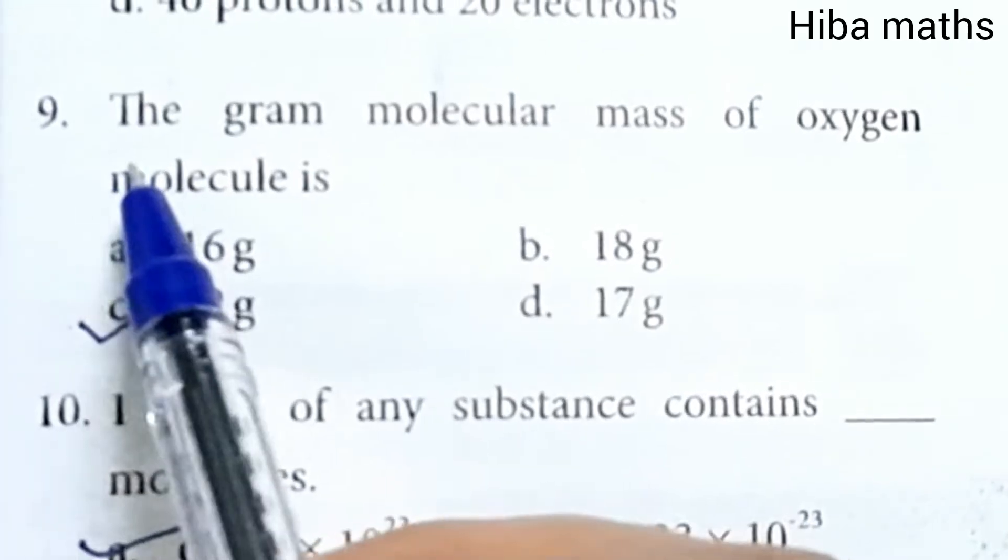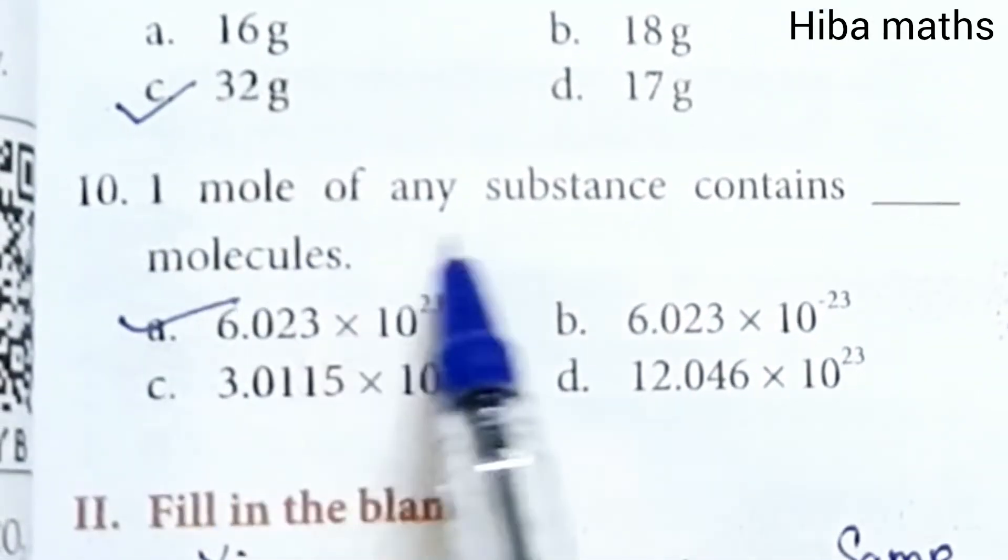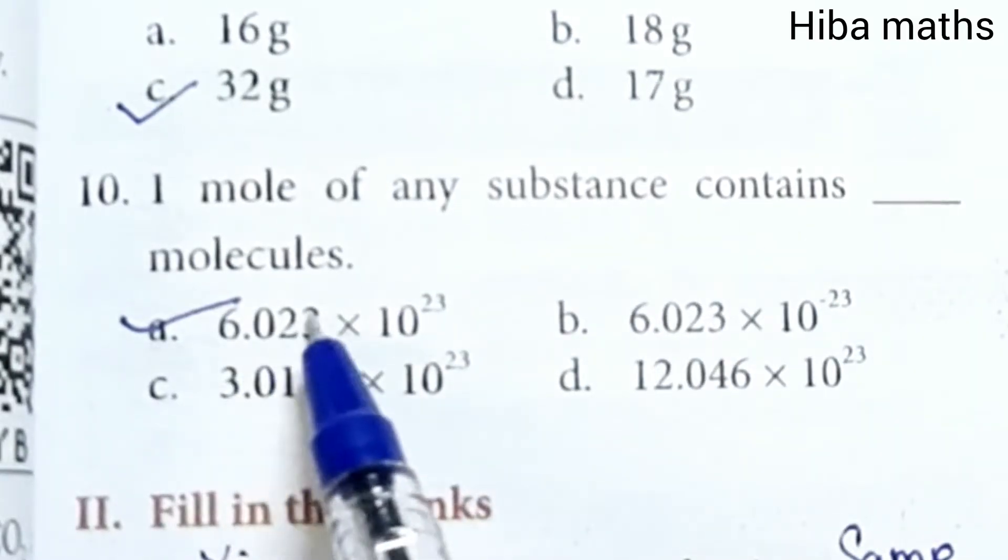Ninth question: The gram molecular mass of oxygen molecule is 32 grams. One mole of any substance contains 6.023 × 10^23 molecules.